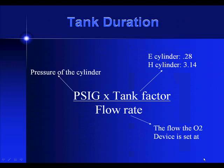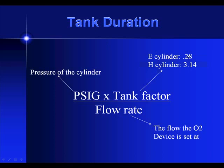Let's move on to tank duration, which is a very simple calculation. The formula is: PSIG times a tank factor, divided by the flow rate. The tank factor depends on the size of the tank. Two of the most common are the E-cylinder at 0.28, and the H-cylinder at 3.14. You plug in the pressure, times the tank factor, divided by the flow rate, and calculate the duration. You may need to divide by 60 to convert minutes to hours.